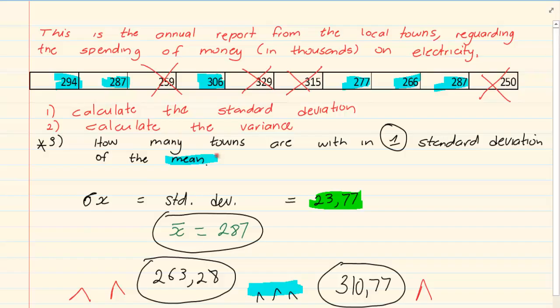So how many towns are within one standard deviation? So how many towns are in this space? So we're going to count 1, 2, 3, 4, 5, 6. So the answer is 6 towns are within one standard deviation.